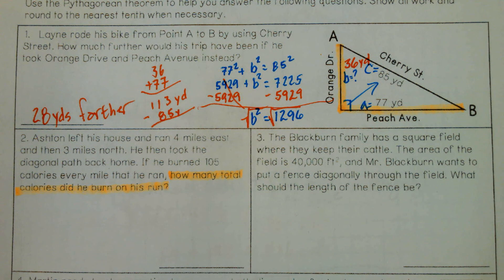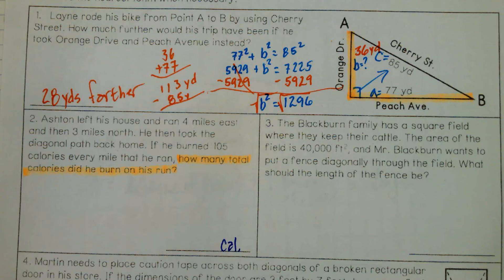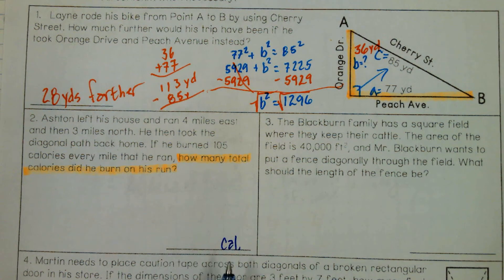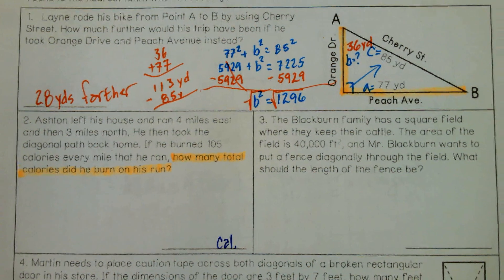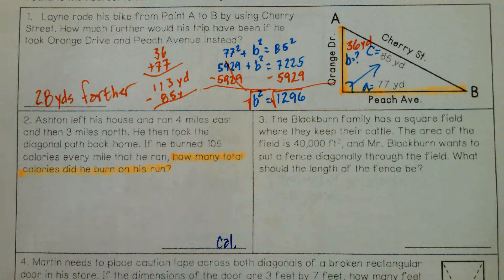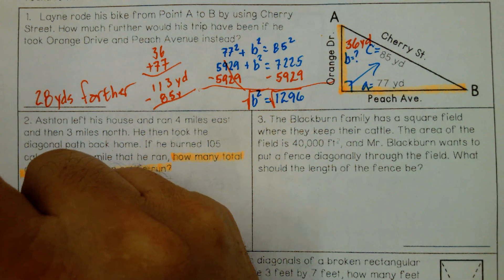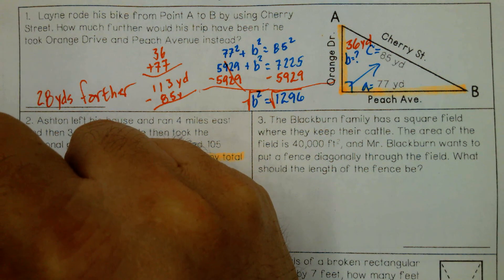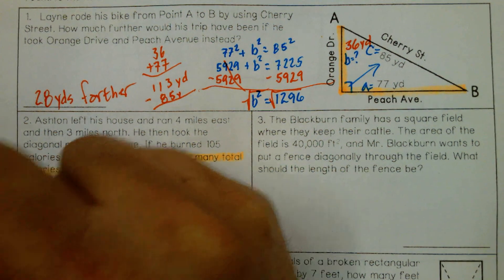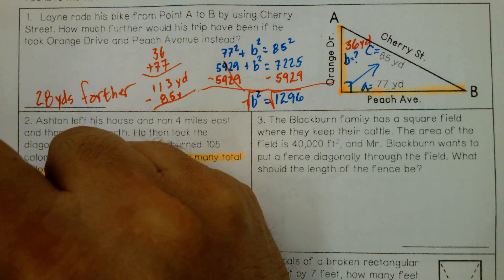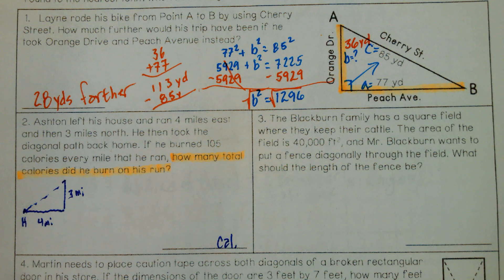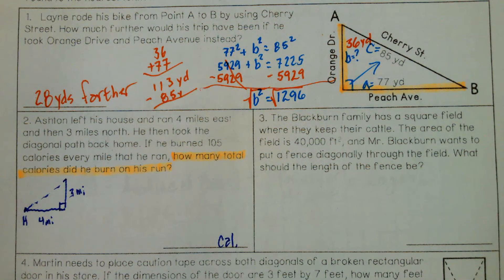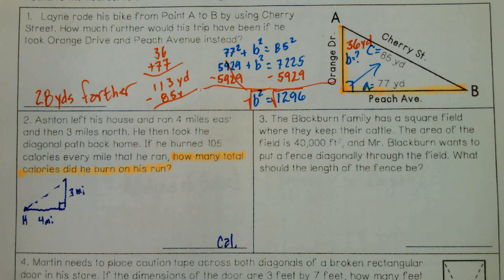So ultimately, we want to figure out how many calories he burned. This is an old trick a teacher told me. Figure out what kind of units you want to end up with so you remind yourself, that's what I want to figure out. Okay, so let's figure out his route. So he went four miles east. So this is home. He went four miles east. Then three miles north. And then he took the diagonal route. So we have to use the Pythagorean theorem to figure out that route. So this time it looks like we're finding C, right? So let's go ahead and do that. Let's find this hypotenuse. How many miles will that be?